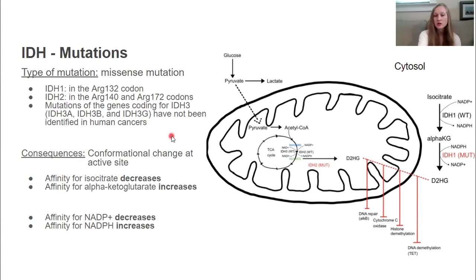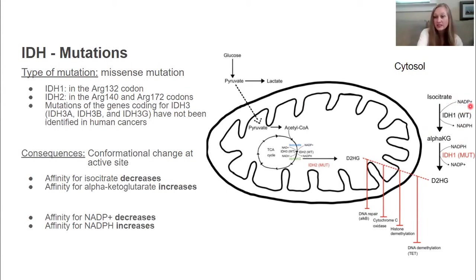These mutations cause a conformational change at the active site of isocitrate dehydrogenase, which decreases its affinity for isocitrate. Instead, its affinity for alpha-ketoglutarate — which was previously the product — now increases. Additionally, the affinity for NADP+ decreases while the affinity for NADPH increases. Here you can see a brief overview of the different areas impacted by this mutation, which we will go over in more detail.